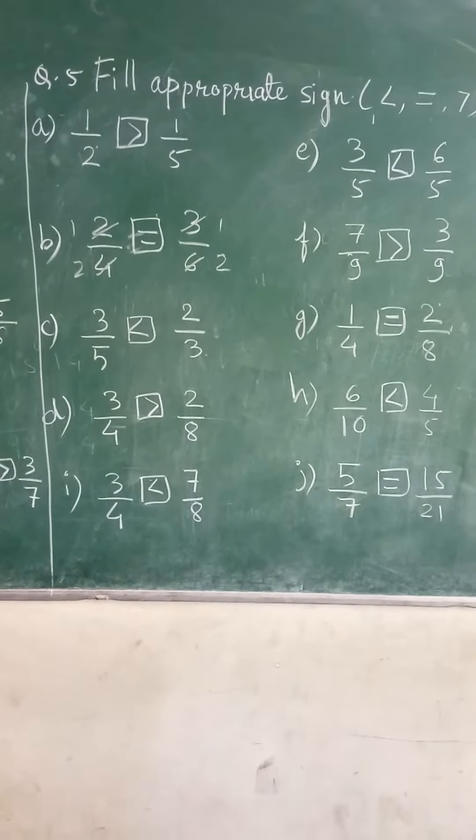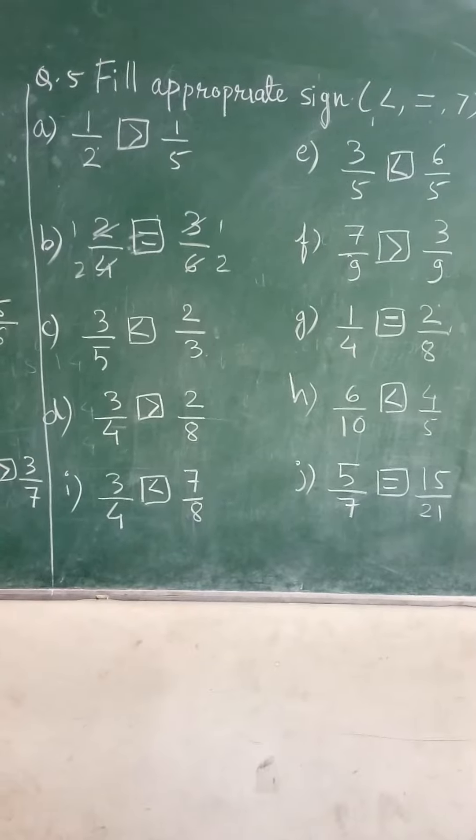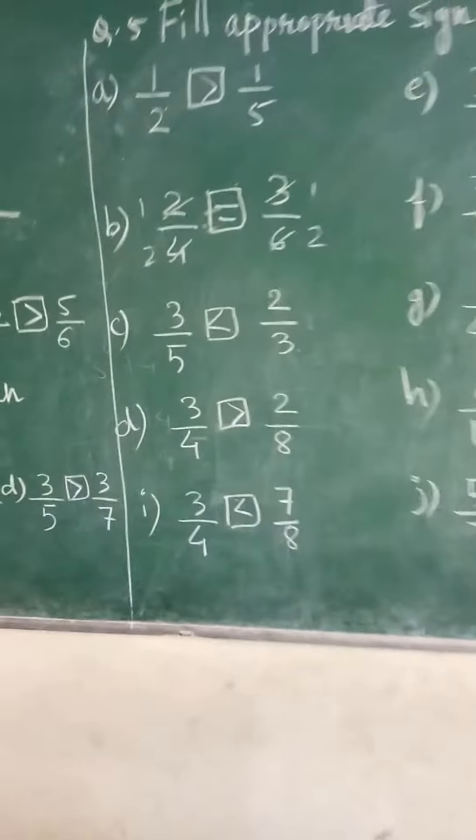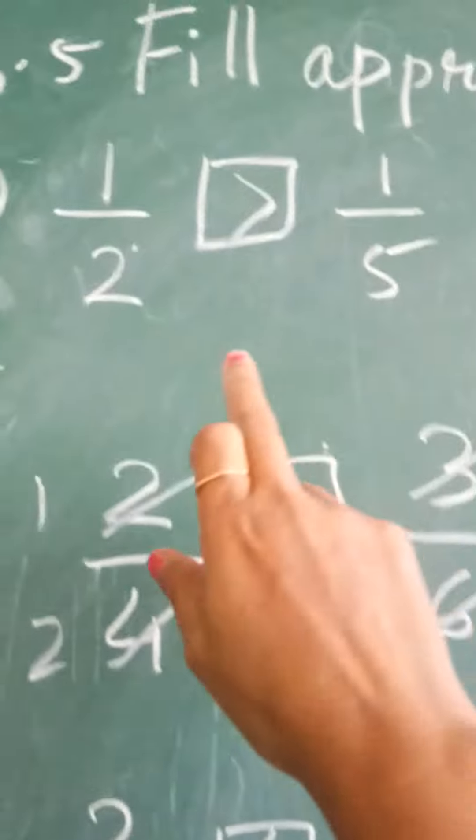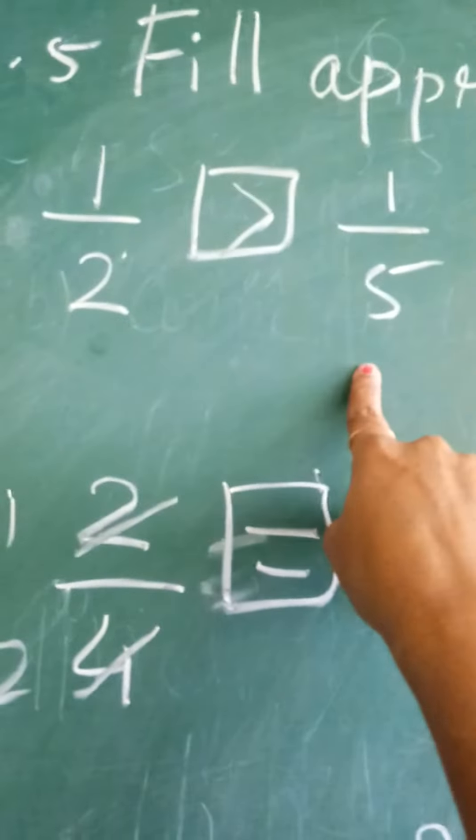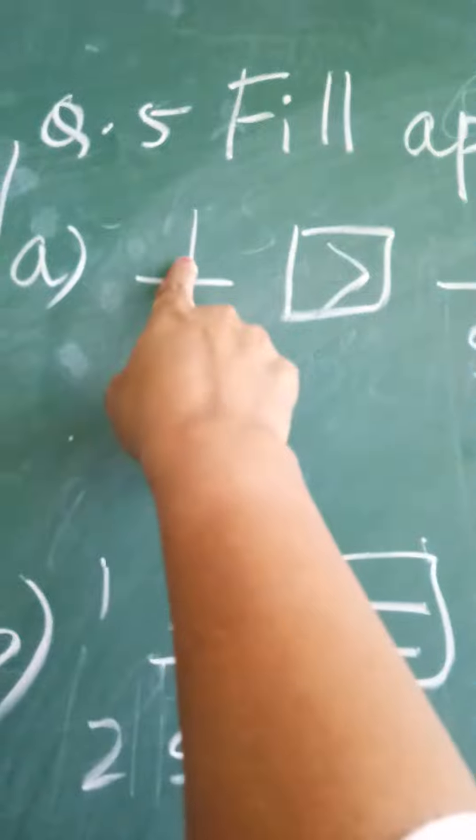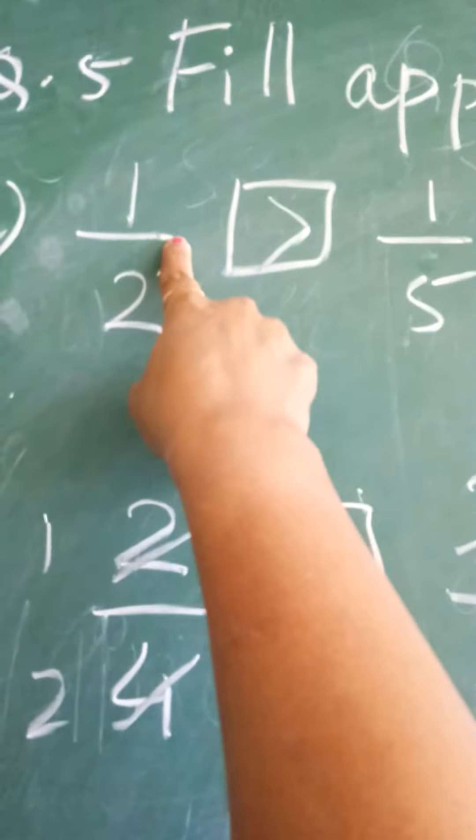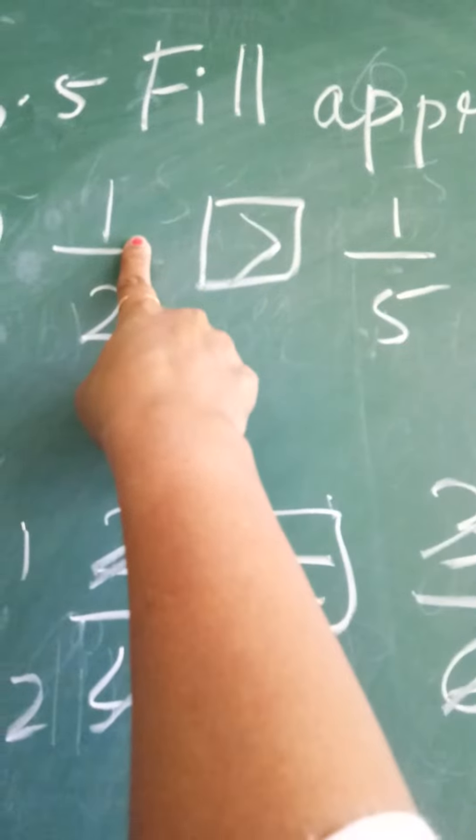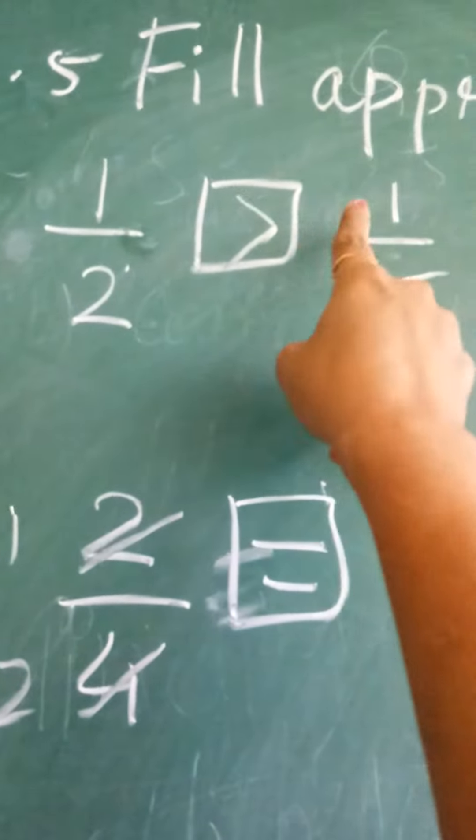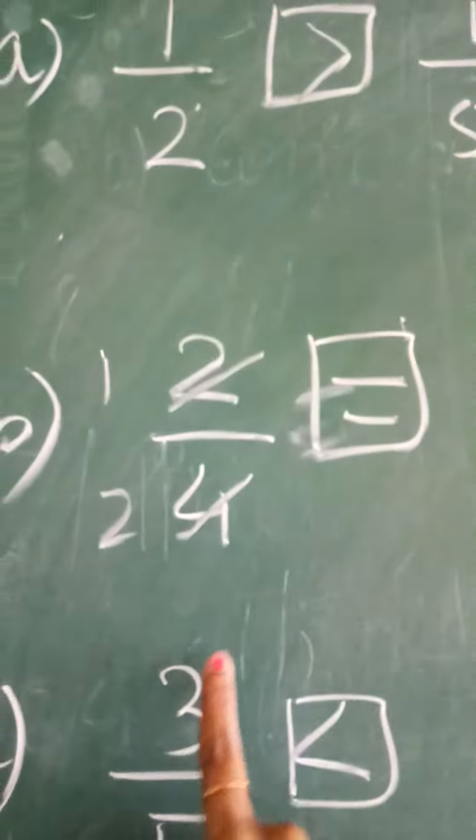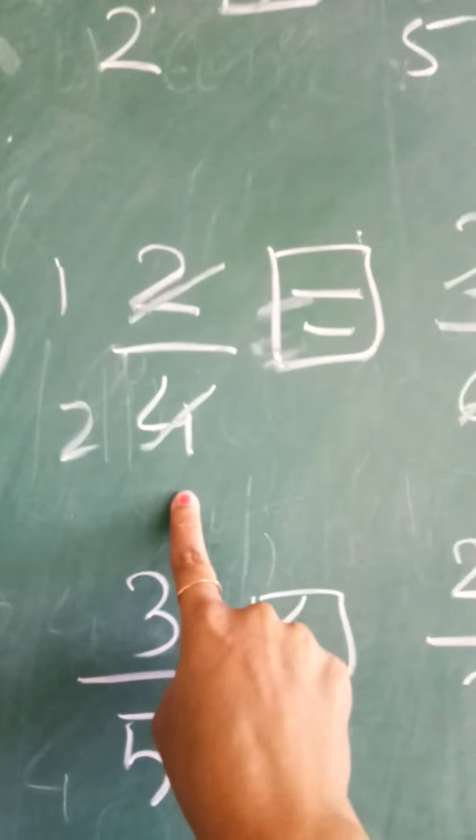First, 1 upon 2 and 1 upon 5 - we have to compare which one is greater, which one is smaller. The simple trick is to cross multiply: 1 upon 2, 1 upon 5. When you cross, 5 ones are 5, 2 ones are 2. Which one is bigger? 5 is greater than 2, so this side is greater.